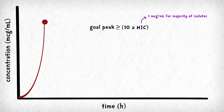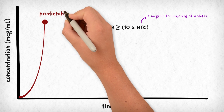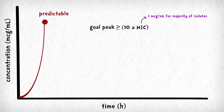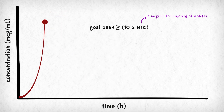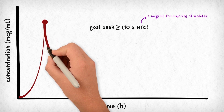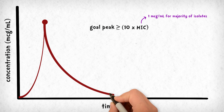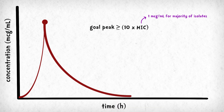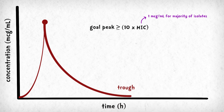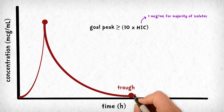We don't usually monitor peak levels because they are not associated with toxicity, and we have enough pharmacokinetic data to confirm that a concentration of at least 10 times the MIC will be reached with standard neonatal doses adjusted for gentamicin's higher volume of distribution. Instead, gentamicin monitoring focuses on preventing accumulation and combating the development of bacterial resistance, so we monitor the trough — the drug level just before a repeat dose is given.